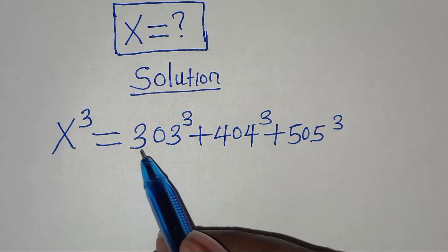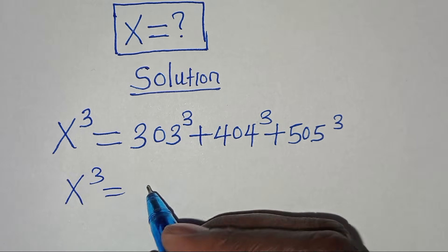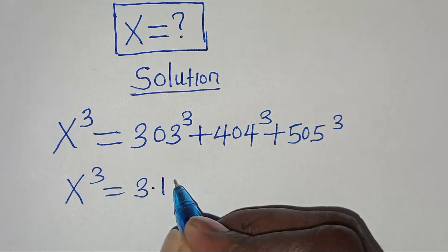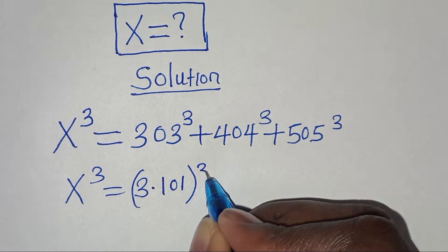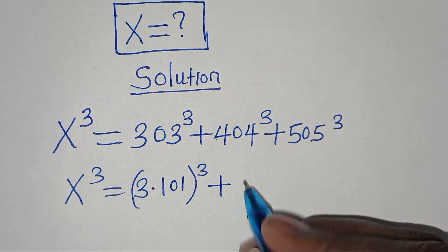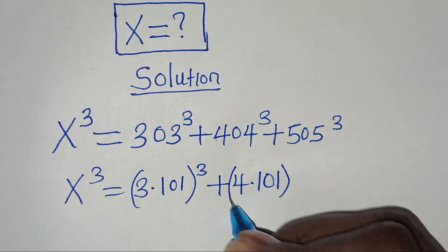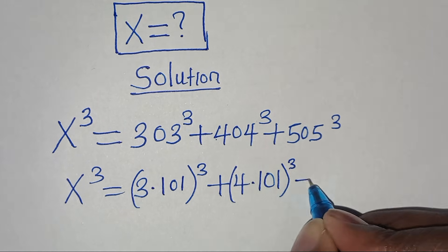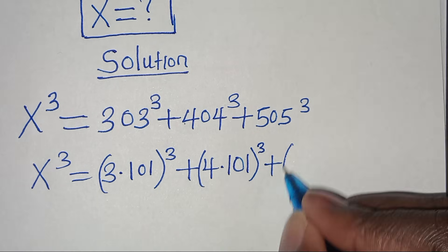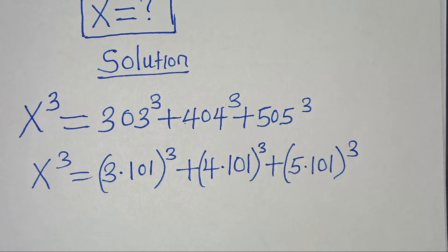We can express 33 to the power of 3 as 3 multiplied by 11, raised to the power of 3. Then plus, we can express 44 to the power of 3 as 4 multiplied by 11, raised to the power of 3. Then plus, we can express 55 to the power of 3 as 5 times 11, raised to the power of 3.